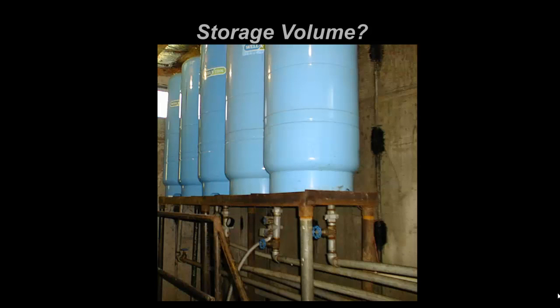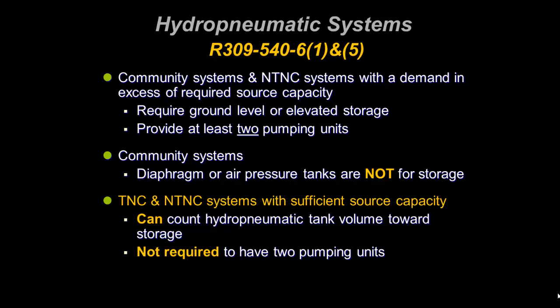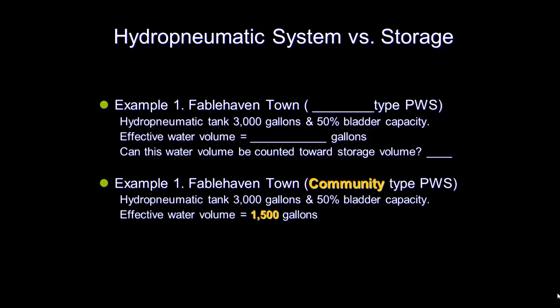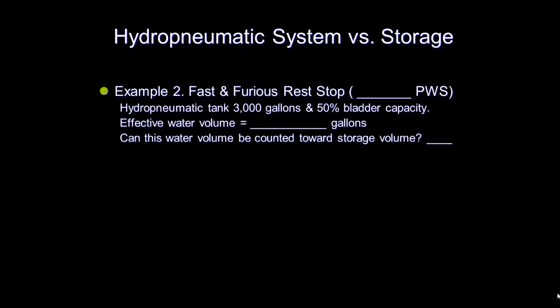We get many questions regarding the storage volume of hydropneumatic tanks. Can the volume of these tanks be included towards the required storage capacity? The answer is: it depends. Community and non-transient non-community systems with demand in excess of their source capacity require gravity storage tanks and must provide at least two pumping units. So for community drinking water systems, hydropneumatic tanks cannot be counted towards the required storage volume. To help explain this, the following scenario is given for the fictitious Fable Haven Town. This system has a hydropneumatic tank with a volume of 3,000 gallons with a 50% bladder capacity. Since this is a community water system, the effective volume of 1,500 gallons cannot be counted towards the needed storage capacity.